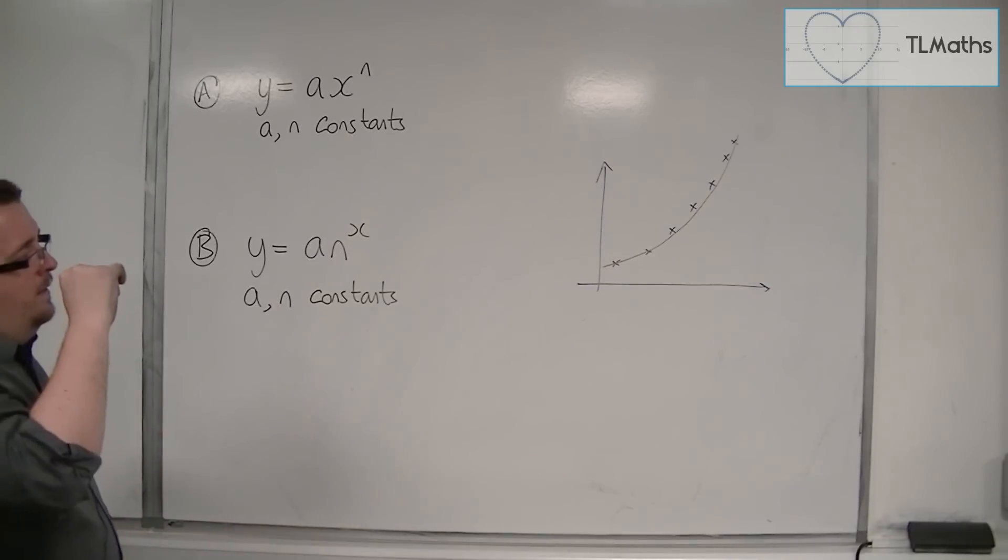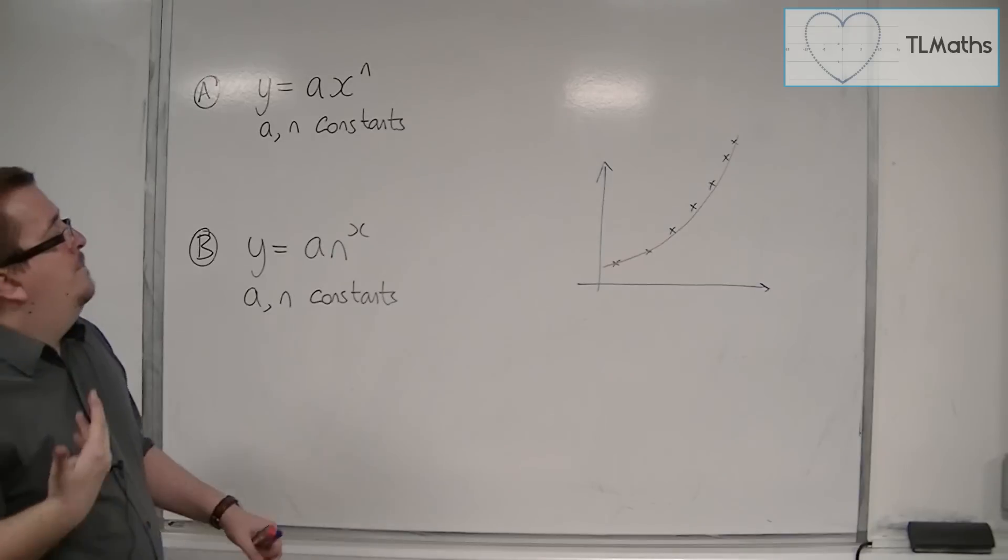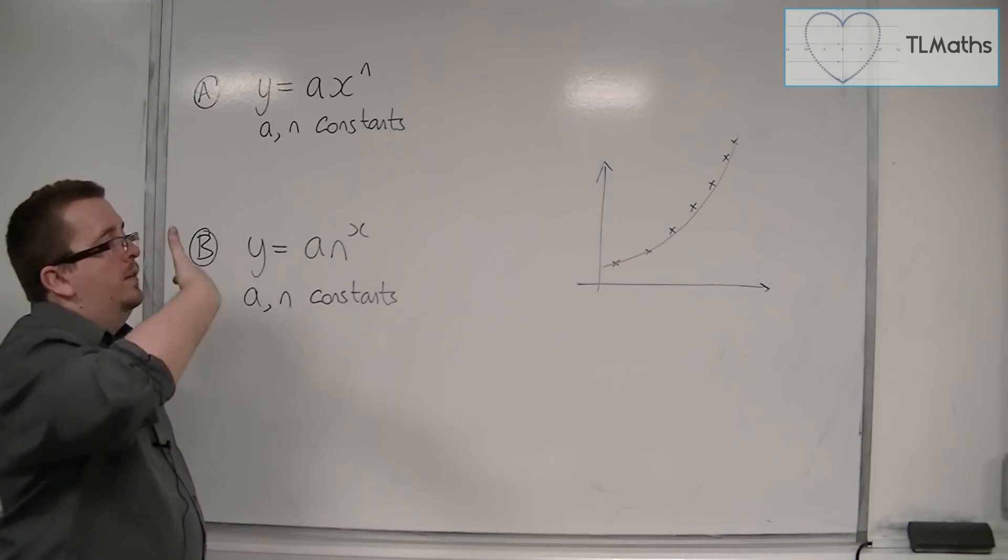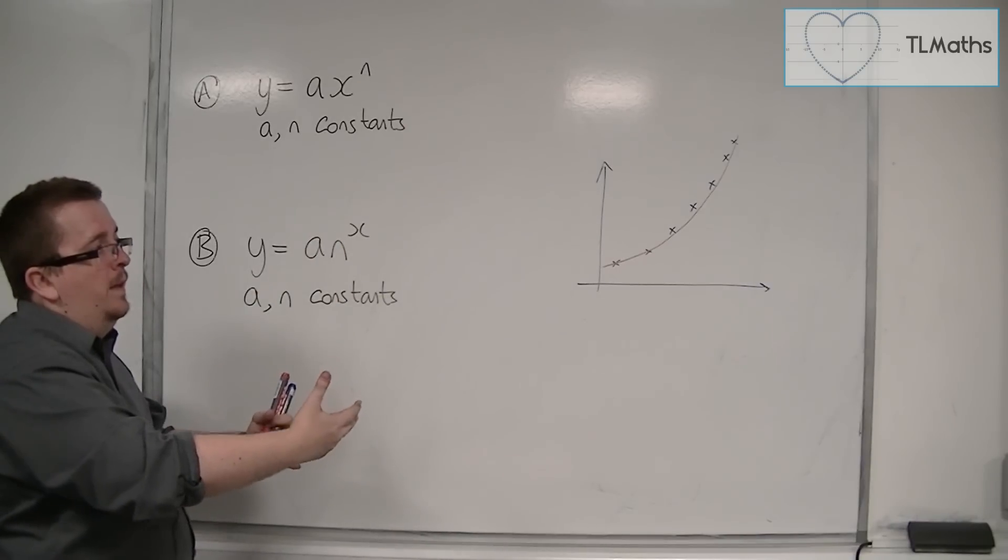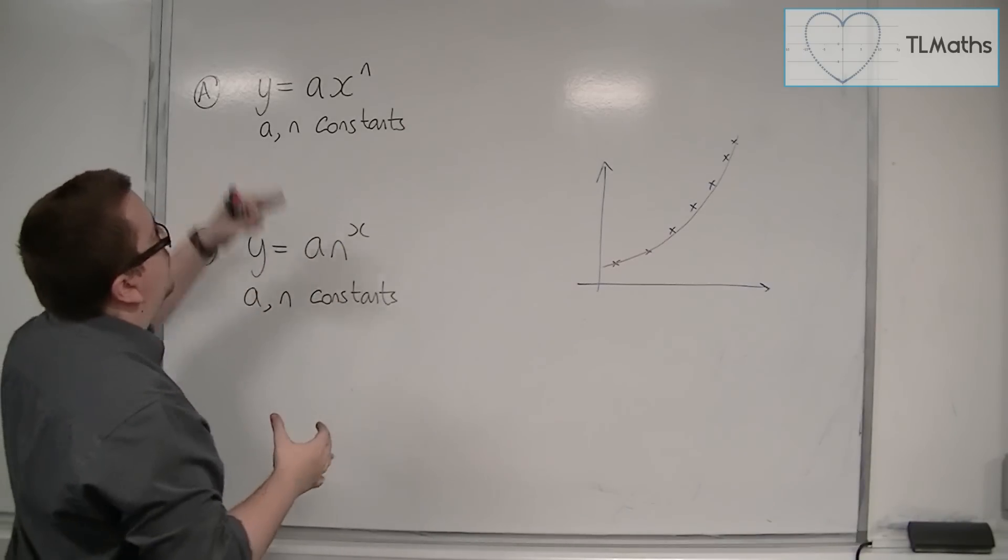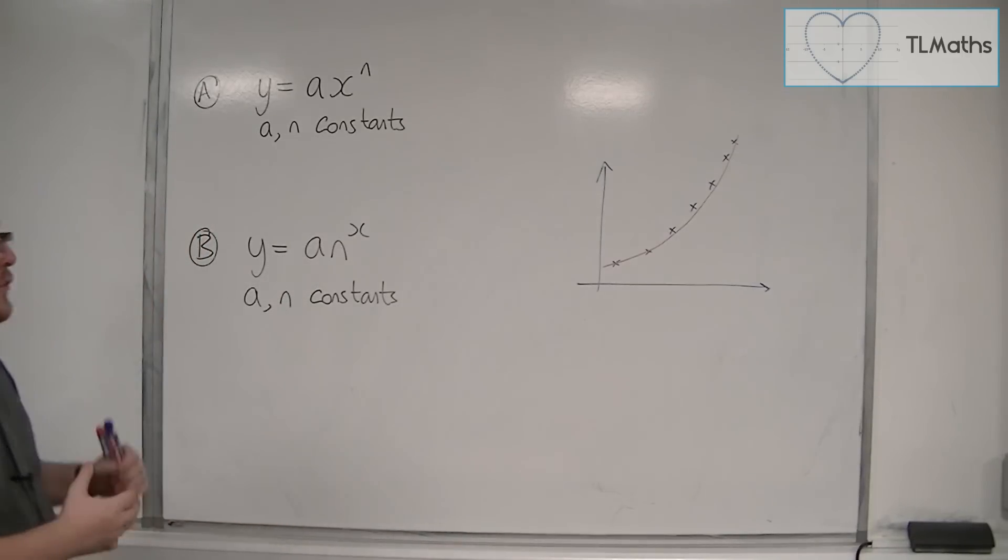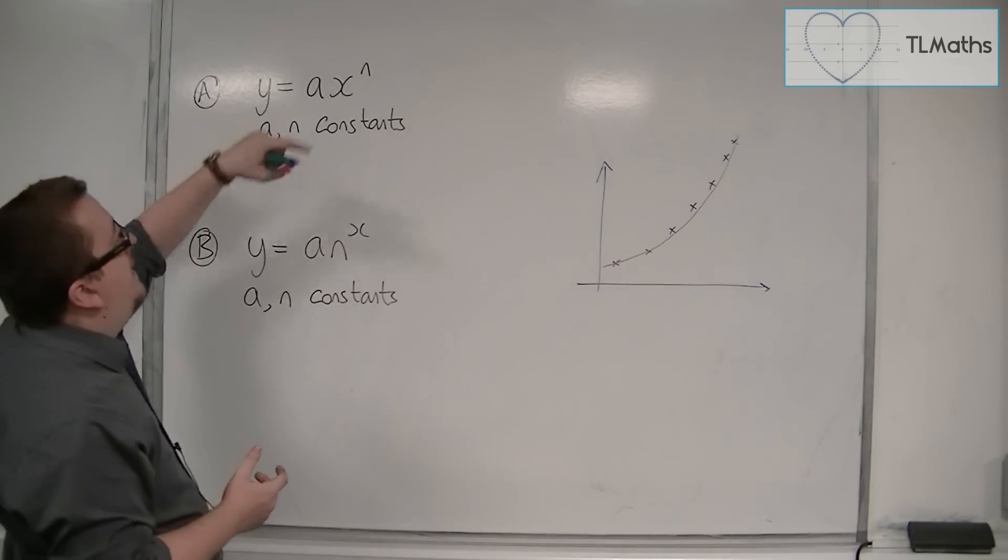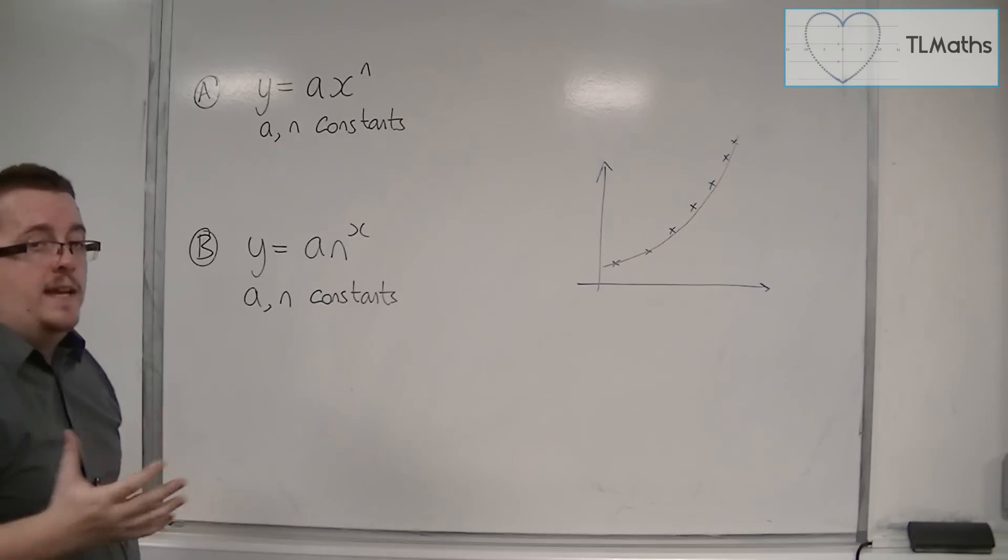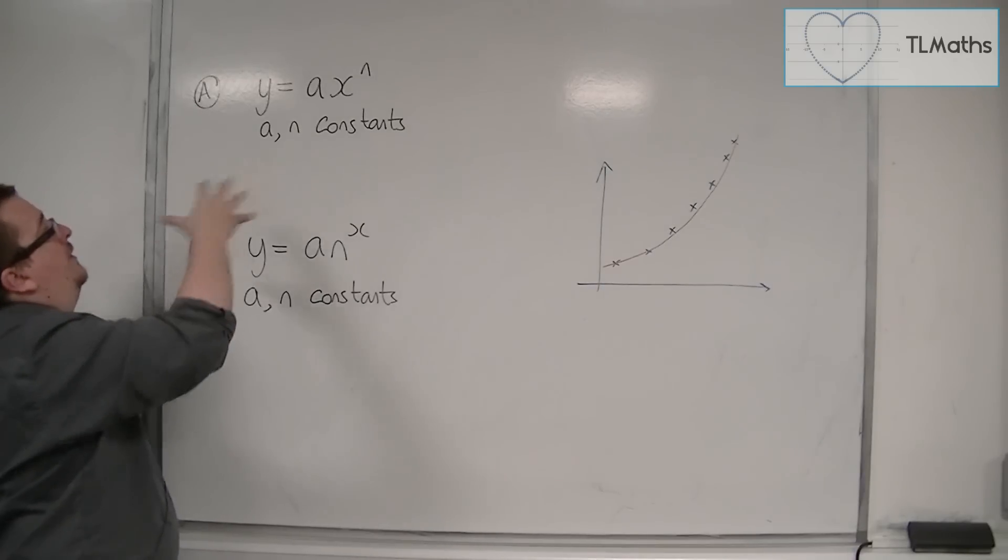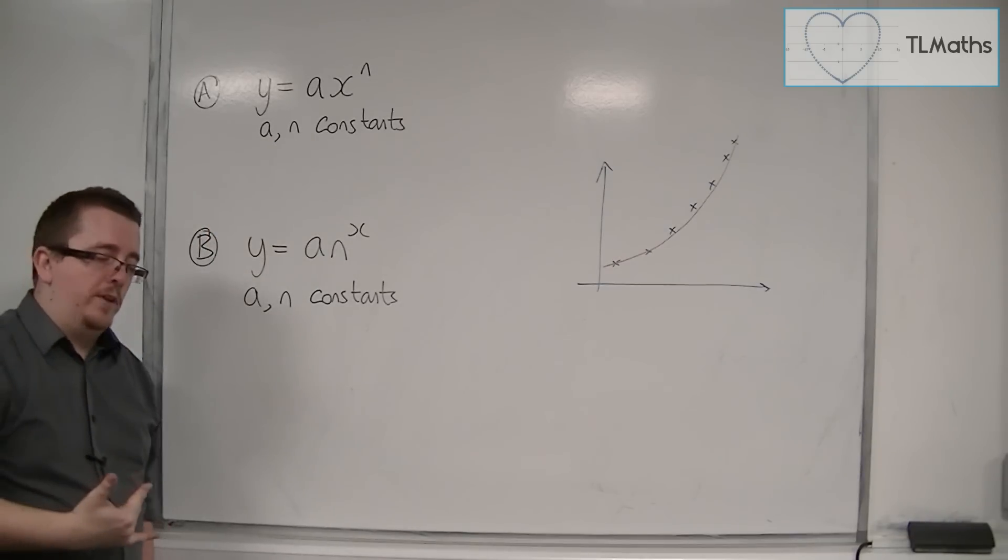Maybe these data points work along this red curve, and the red curve has the equation y equals ax to the n, for example. So the scientist presupposes that the curve has the equation y equals ax to the n. And we're going to make sure that we understand that the a and the n are constants.